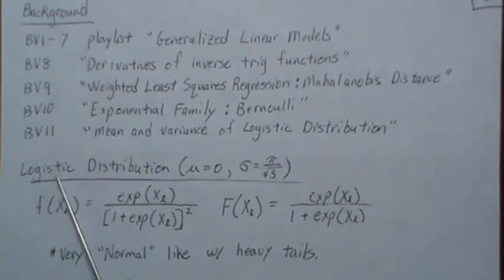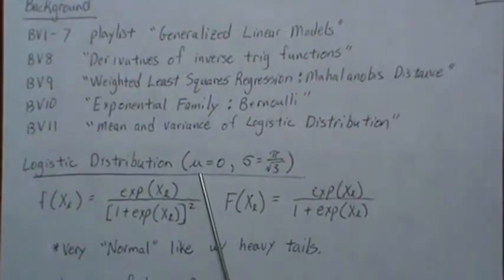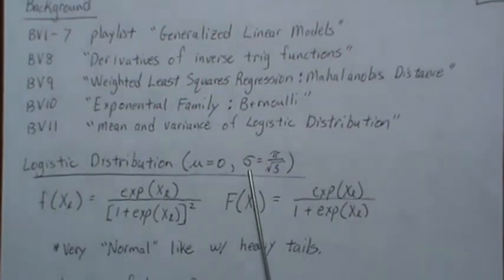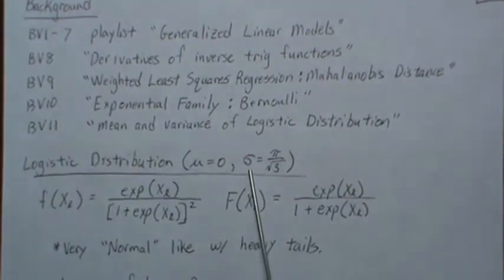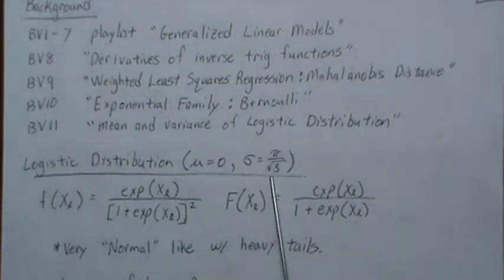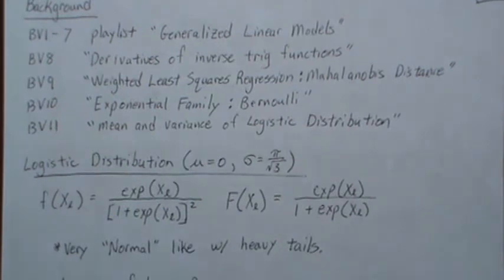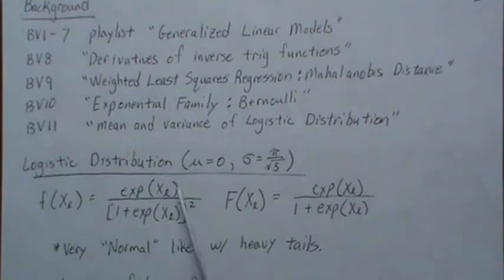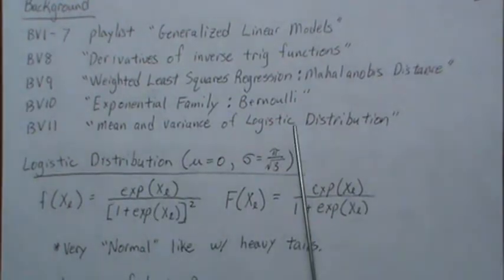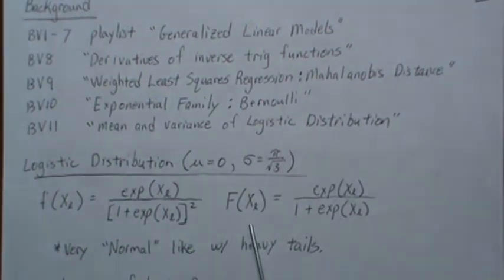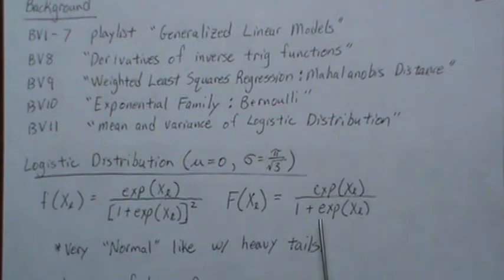Now, very quickly, the logistic distribution in this video we're going to assume has a mean of zero and some standard deviation. Ultimately we want it to be a standard deviation of pi over the square root of three, or a variance of pi squared over three. With this standard deviation, the form of the density is very nice. In BV11 we derive the mean, the variance, and show that it is a PDF.